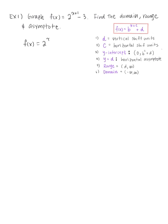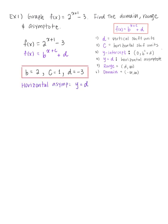So f(x) = 2^(x+1) - 3. We're analyzing functions of the form f(x) = b^(x+c) + d. Our b is going to be 2, our c is going to be 1, and be careful — your d is going to be negative 3. The horizontal asymptote formula is y = d, so our horizontal asymptote is at y = -3.